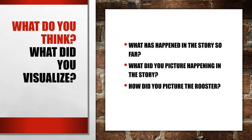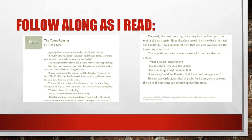We're at that spot again where I ask: what did you think, what did you visualize? What has happened in the story so far? What did you picture happening in the story, and how did you picture the rooster? Now for our second read, follow along as I read and think about the themes or lessons that Arnold Lobel is trying to relay through this fable.